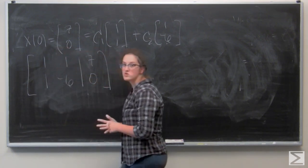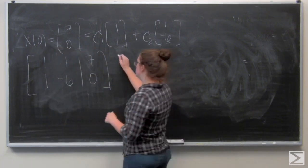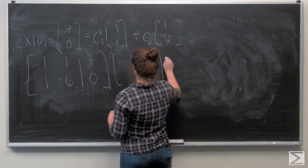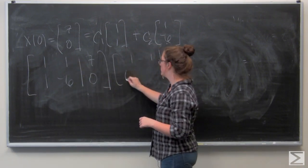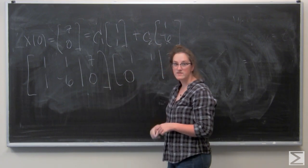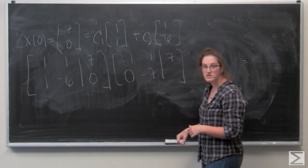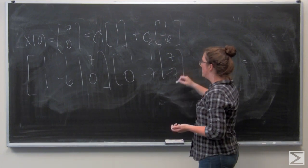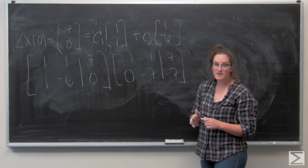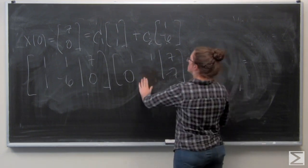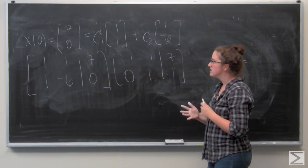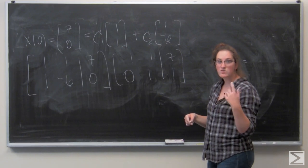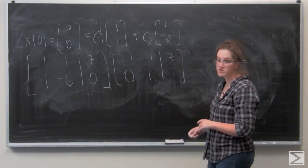Let's get started by subtracting the first row from the second. So 1 minus 1 is 0. Negative 6 minus 1 is negative 7. And 0 minus 7 is negative 7. And I can reduce the second row by a factor of negative 7 to get 0, 1, and 1. Now let's go ahead and subtract the second row from the first so I can have the matrix in reduced row echelon form.